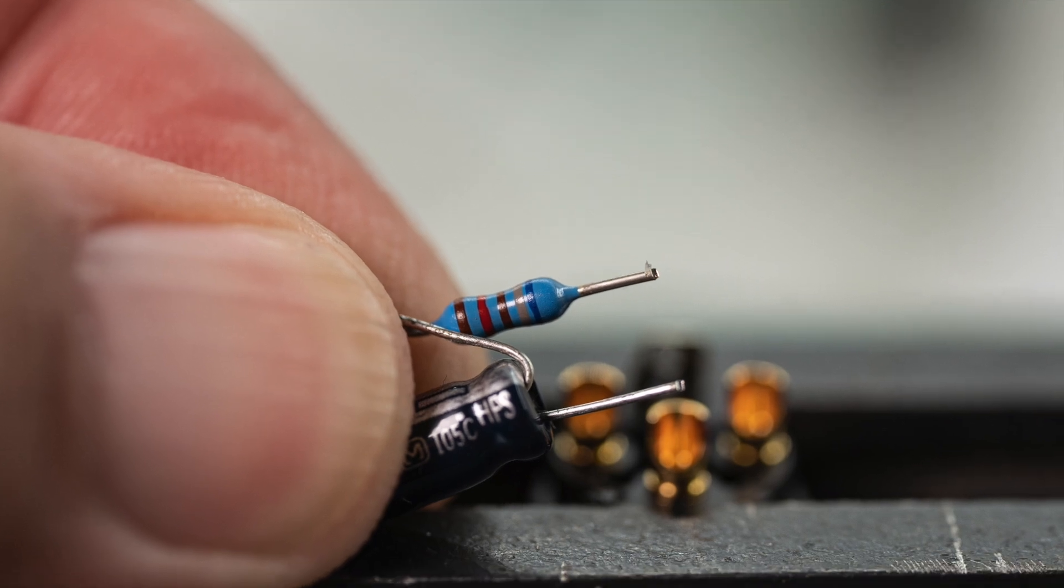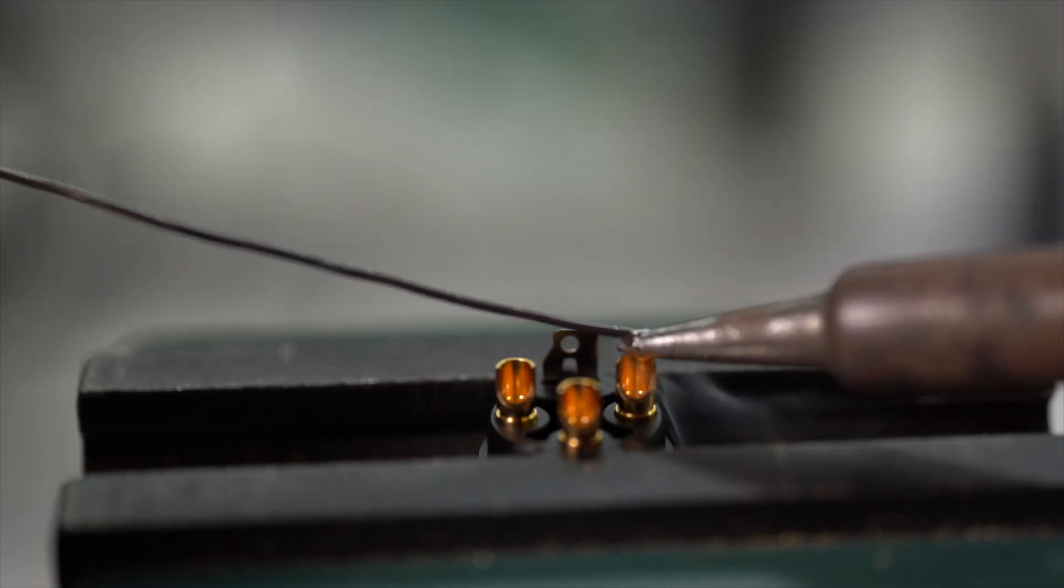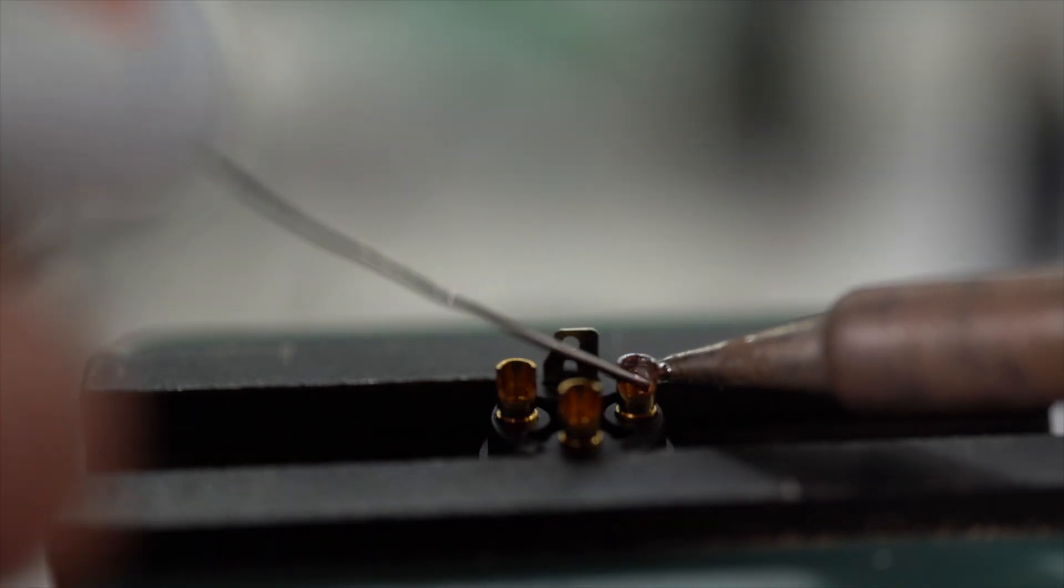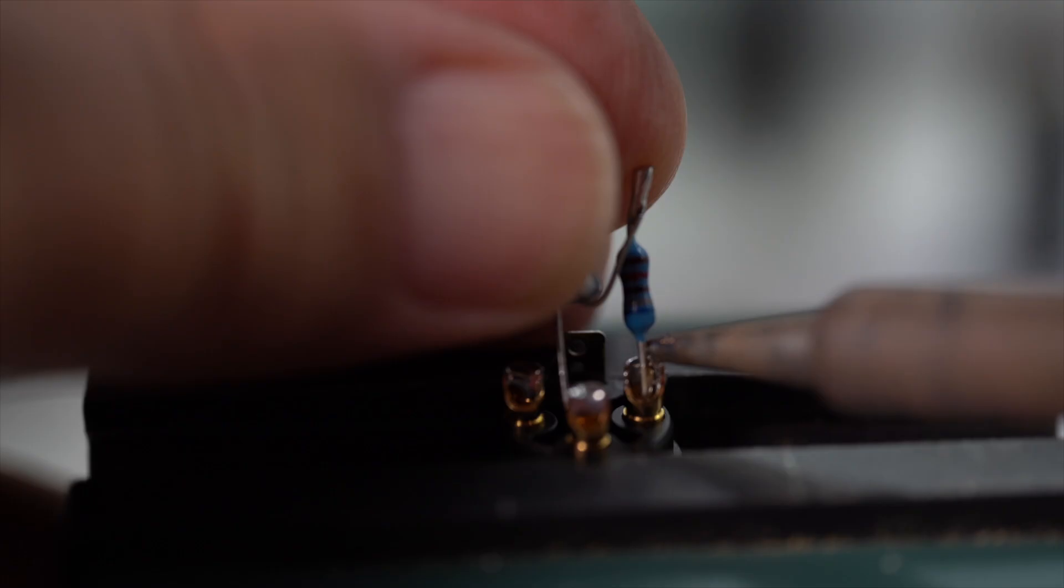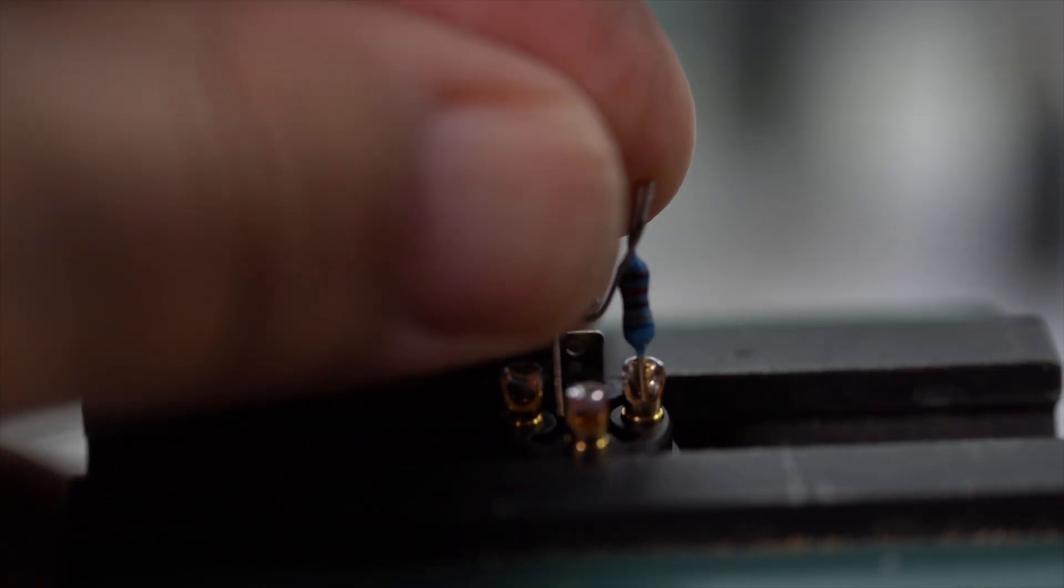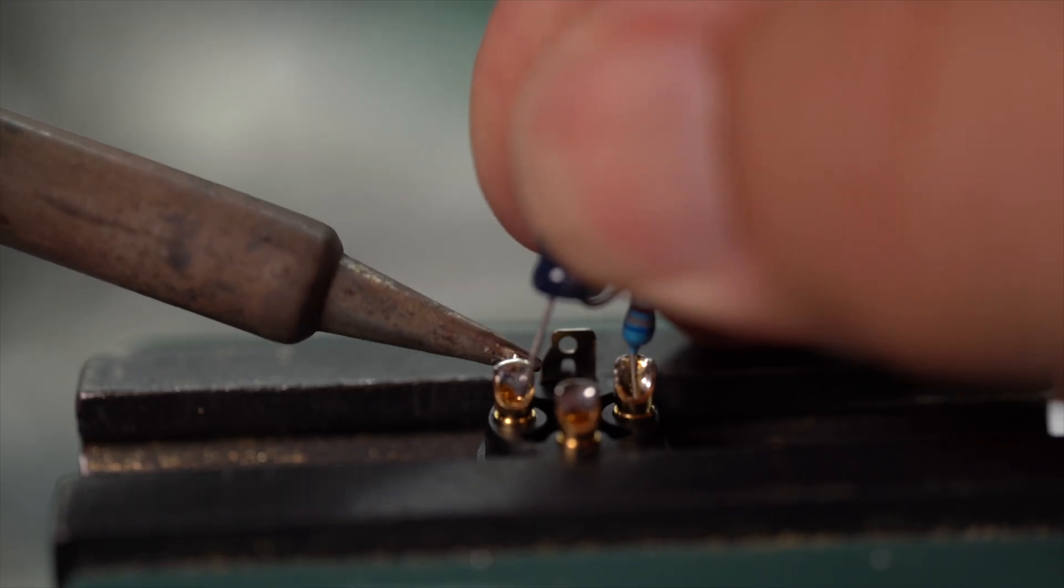Trim the other two leads so that there is enough to go into the XLR inputs. With the XLR jack body mounted in the vise, tin all three pins. Tin the resistor and capacitor leads. Now solder the resistor lead to pin one and the capacitor lead to pin two.